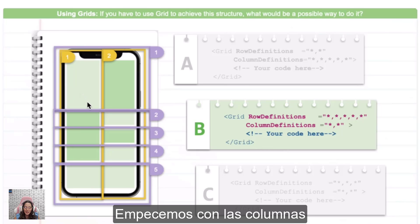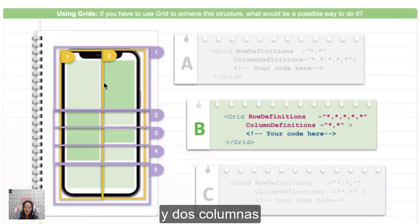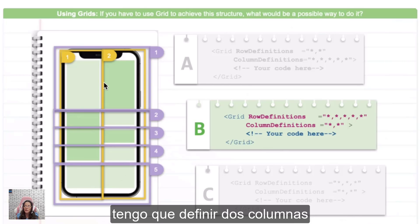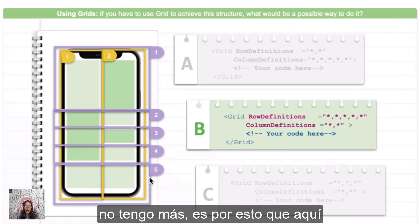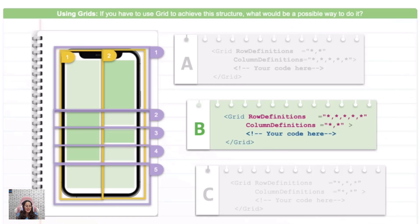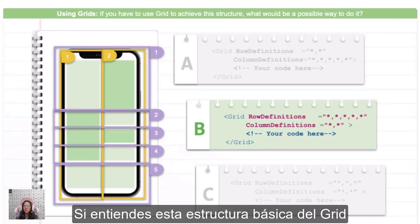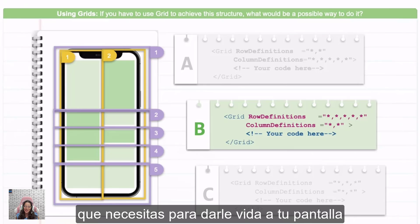Let's start with the columns. Here I have one column, as you can see here, and two columns. I don't have more elements, that's why I have to define two columns. But now let's continue with the rows. I have one row, two rows, three, four, and five. I don't have any more. So that's why here I have to define five rows for my grid. If you understand this basic grid structure, you will be able to add all the visual elements you need to bring your screen to life.